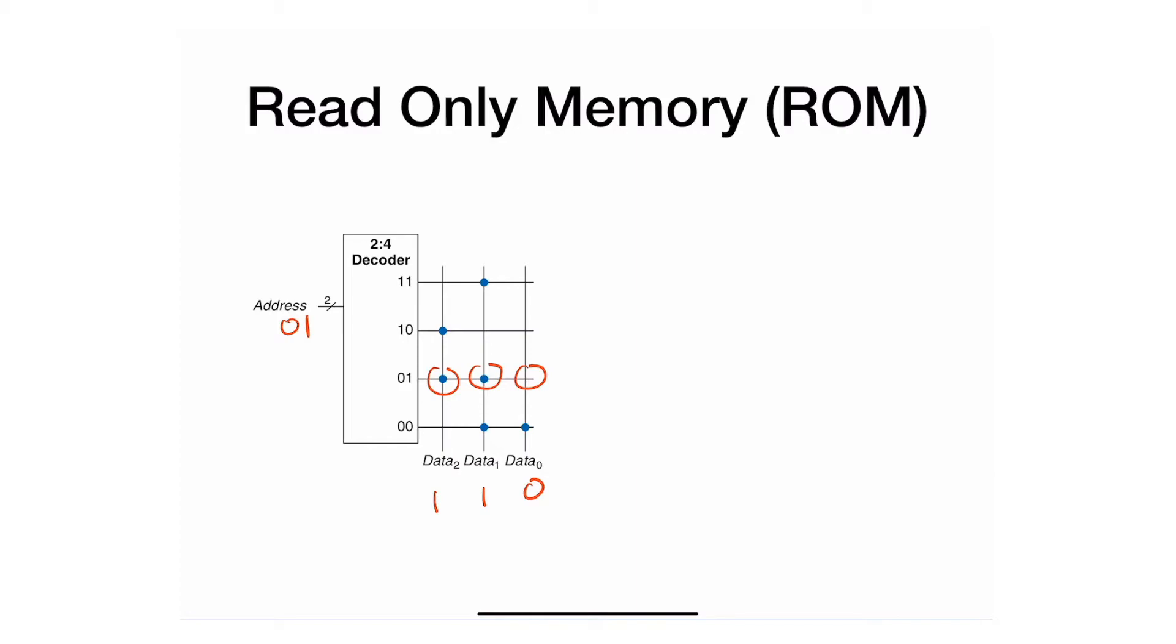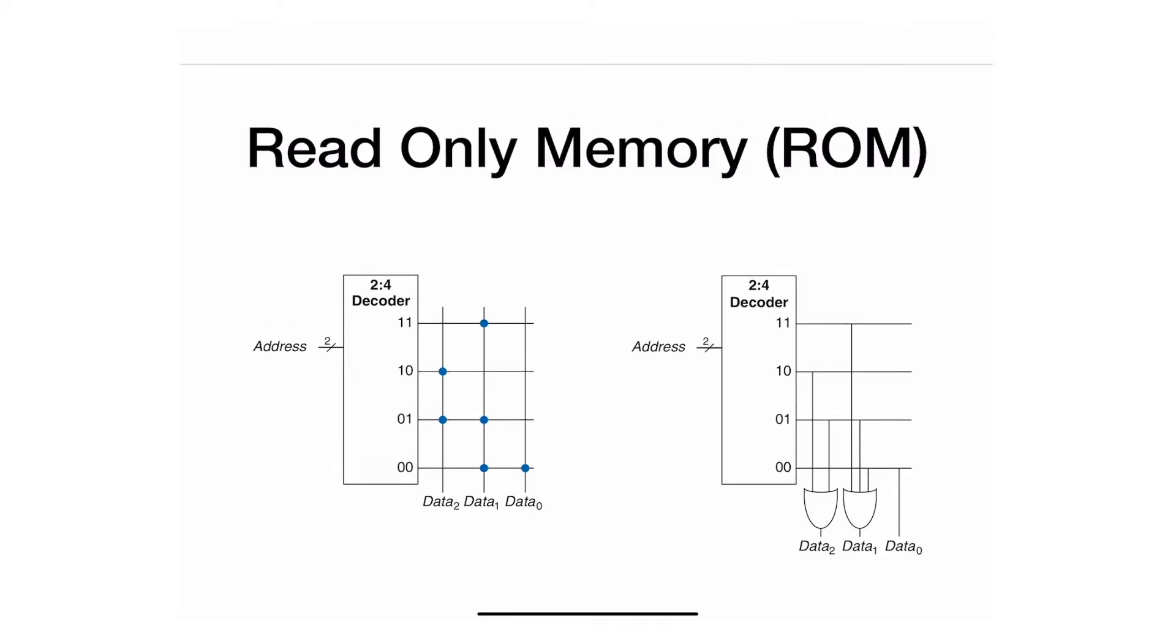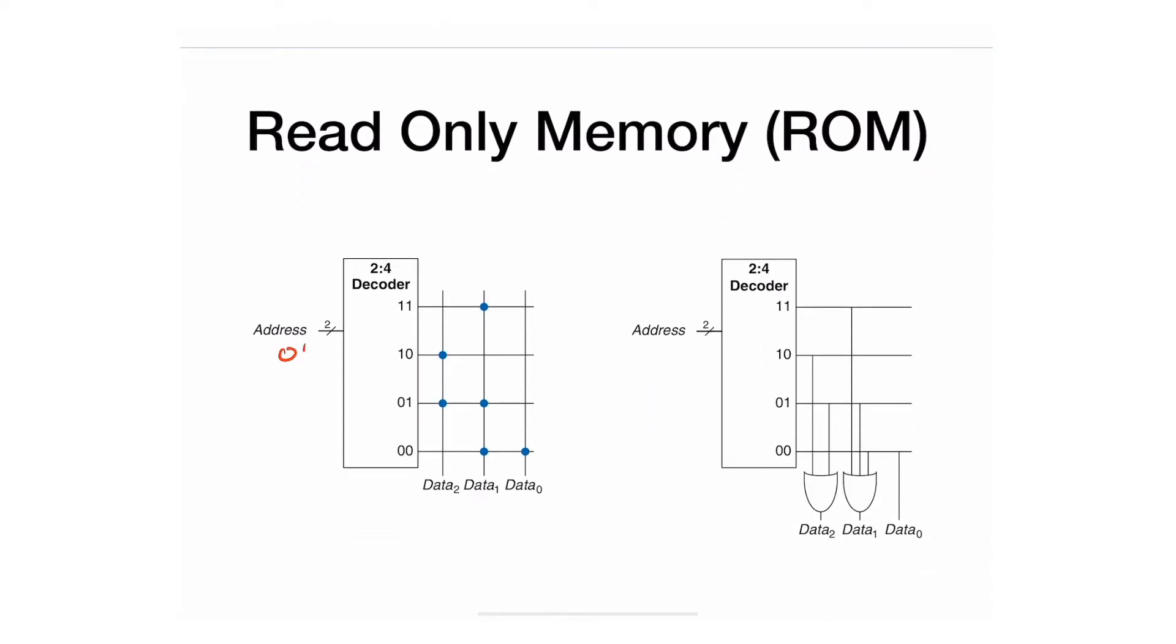This is very useful because if instead of putting these dots we decided to put OR gates, look what happens. I'll specify zero one again. It gives me one, one, and zero. I can do the same exact thing—put zero one and get one one zero. But what the OR gates give me is the following.